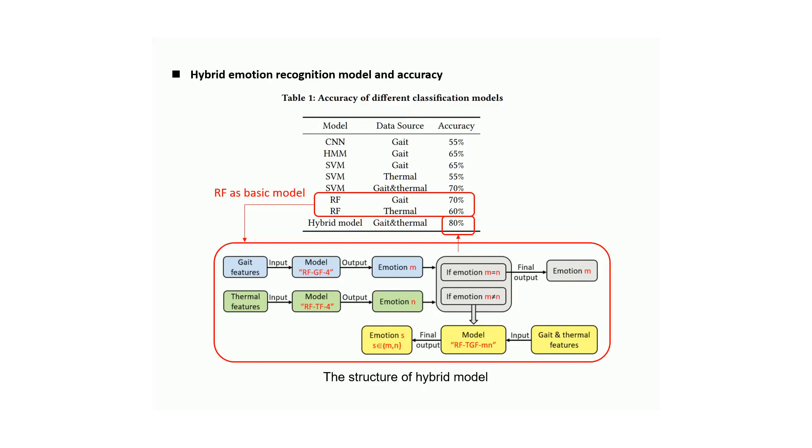First, we input gait features to the RF-GF model, which is trained with gait features in the emotion database, and get the output emotion M. Similarly, we get the output emotion N. If M equals N, the final output is emotion M or N.